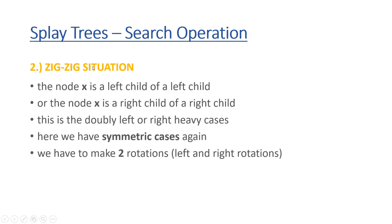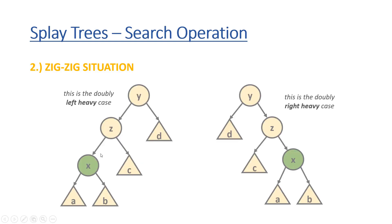What about the zig-zig situation? Node x is a left child of a left child, or a right child of a right child. This is the double left-heavy or double right-heavy situation, and we have to make two rotations. Node x is a left child of its parent, and the parent is a left child of its parent — or node x is a right child of its parent and the parent is a right child of its parent.